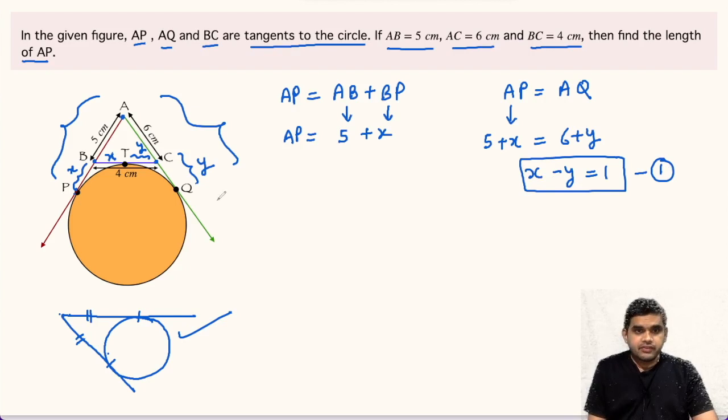If we focus on the length BC, BC is 4 centimeter as given to us, and BC is made up of two parts X and Y. We can write X plus Y equal to 4. Let this be equation number 2.